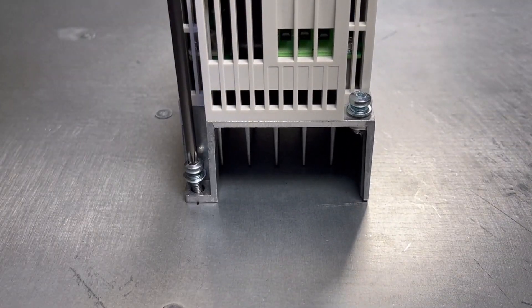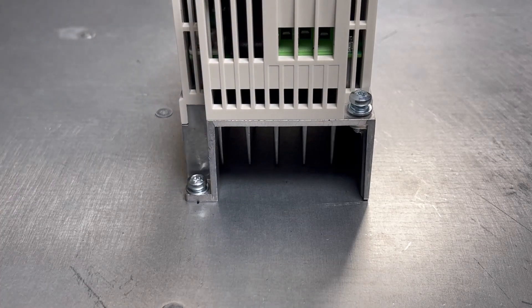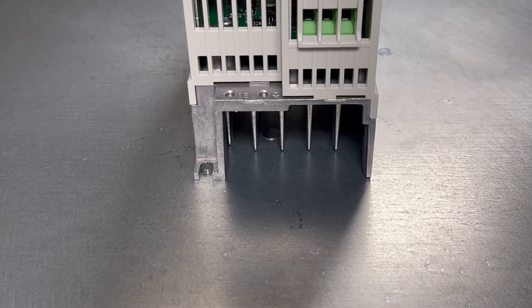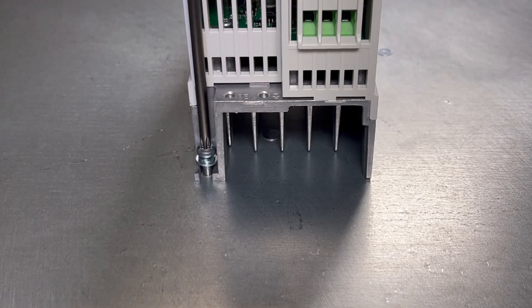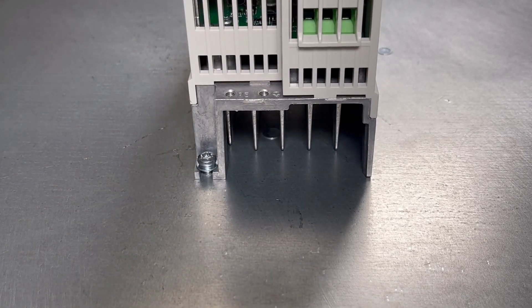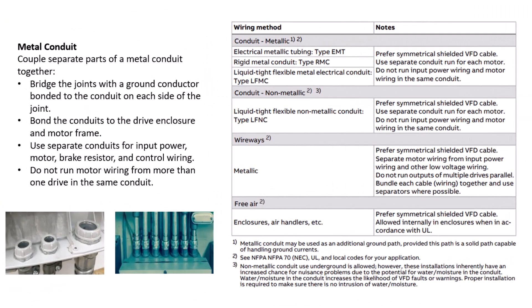Third, attach the drive to the mounting holes using the provided hardware and torque the hardware to spec according to the values listed in the Quick Installation Guide and Hardware Manual. Run the supply power, control, brake resistor if applicable, and motor cable connections to the drive enclosure through their own individual metallic conduits.